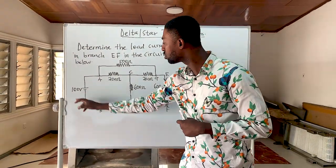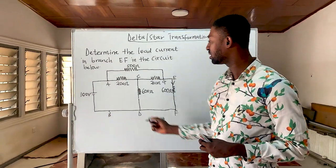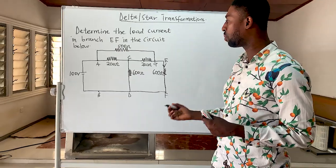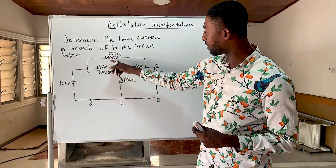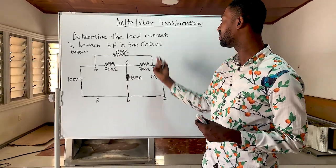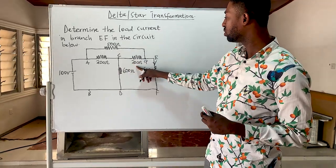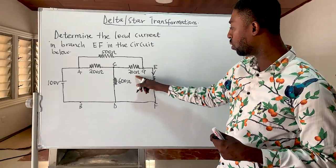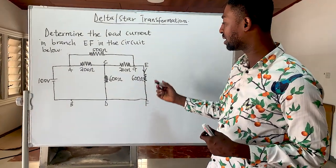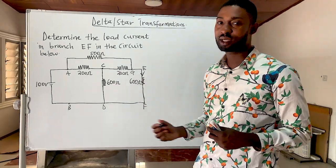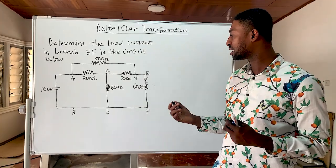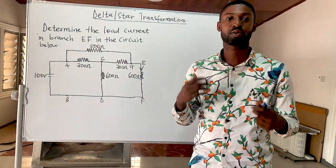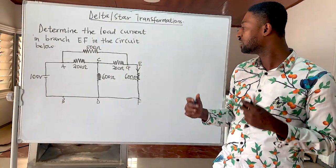We have a 100 volt source driving a current through the circuit. When we look at this circuit we realize that none of the resistors are either connected in series or in parallel. The 200 ohm and 500 ohm resistors are neither in series nor parallel. For resistors to be in series, one end must connect to the other; for parallel, both ends of the two resistors must connect together without any circuit elements in between.